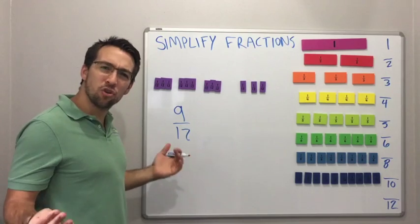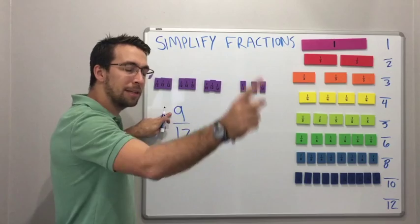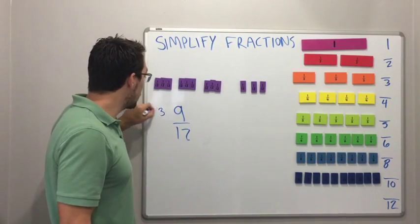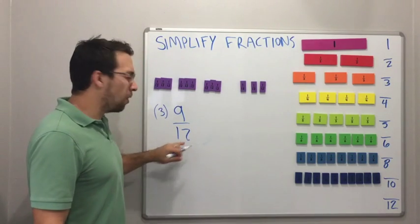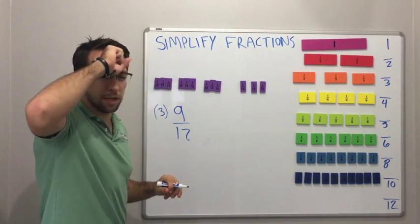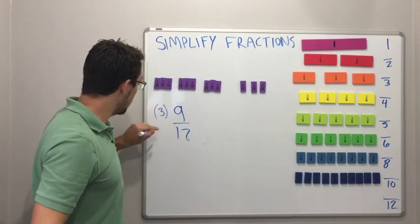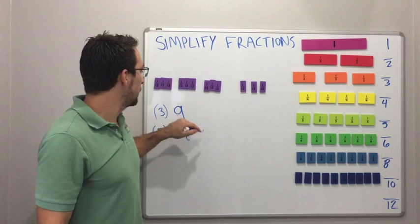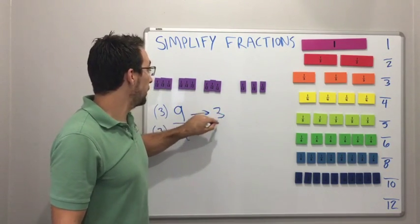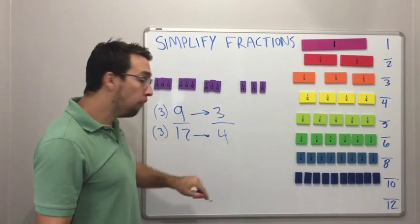Can we find the greatest common factor? 9 is 1 times 9 and 3 times 3. 3 is the greatest common factor out of the 9. 12. 1 times 12, 2 times 6, 3 times 4. Oh! 3. Boom. Watch this. So we can divide 9 by 3. 9 divided by 3 is 3. And 12 divided by 3 is what? 4.